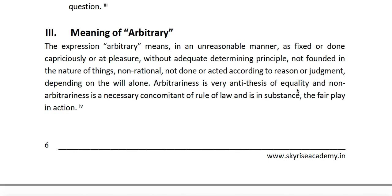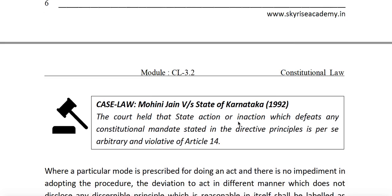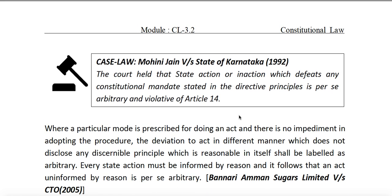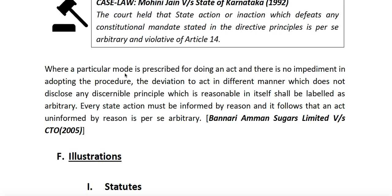Arbitrariness is the very antithesis of equality. It also includes state inaction, as held in Mohini Jain versus State of Karnataka — if the state has a constitutional mandate and doesn't fulfil it, that too will be arbitrary and violative of Article 14. Also, when a particular mode is prescribed in a statute for doing an act and one deviates from it without any hurdle, that will also be labelled as arbitrary.